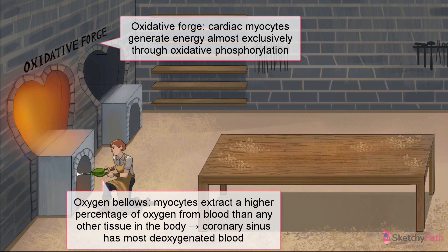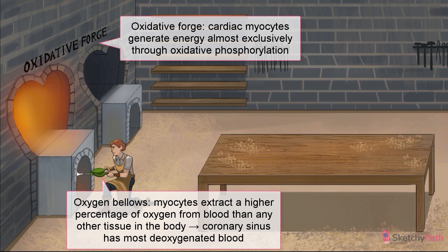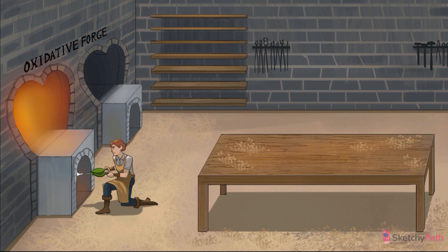It's all about oxygen. Just like a medieval forge needs that sweet flow of oxygen to keep the flame going, cardiac myocyte function is dependent on a constant flow of oxygen provided by the coronary arteries. In fact, cardiac myocytes generate energy almost exclusively through oxidative phosphorylation — hence the oxidative forge. These myocytes extract a higher percentage of oxygen from passing blood than any other tissue in the body.